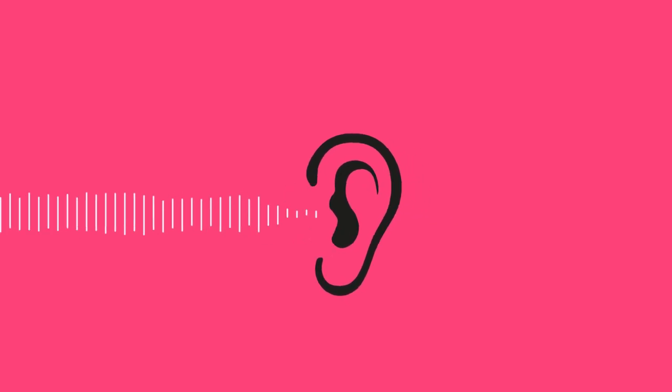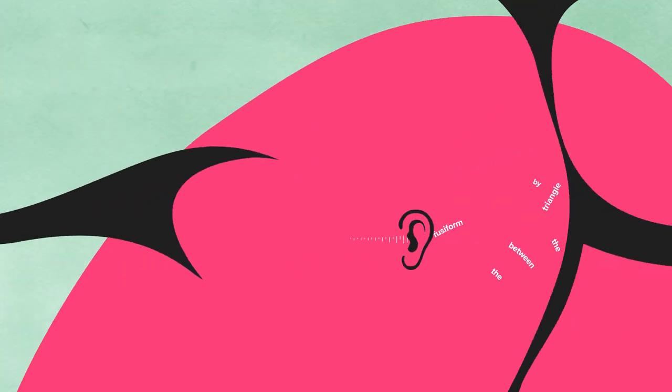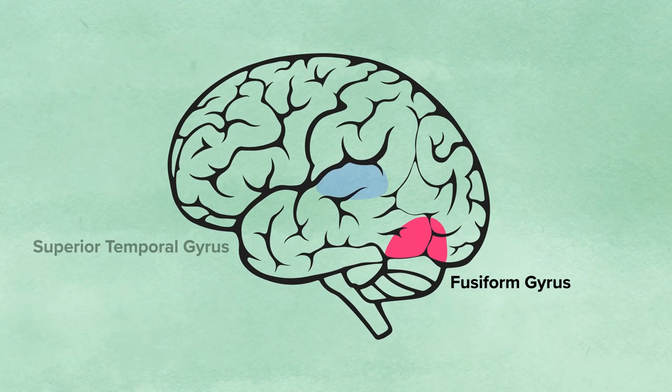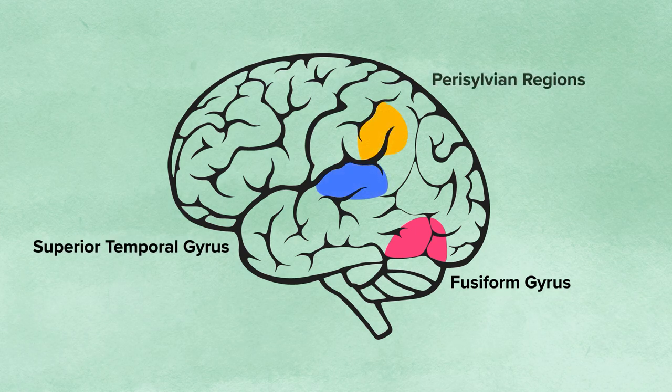That is primarily done by the triangle between the fusiform gyrus, the superior temporal gyrus, and the perisylvian regions.